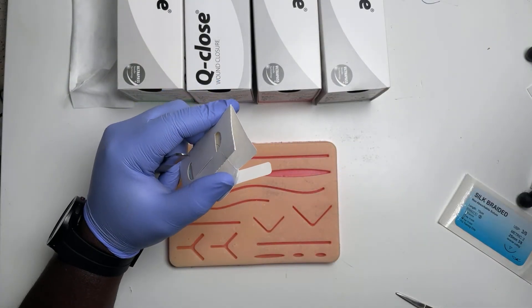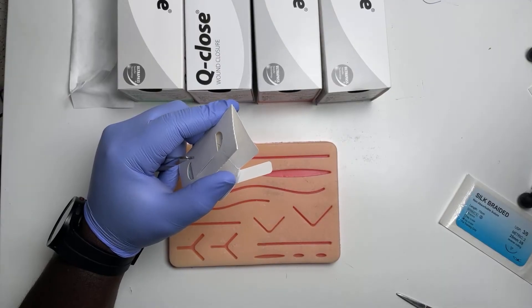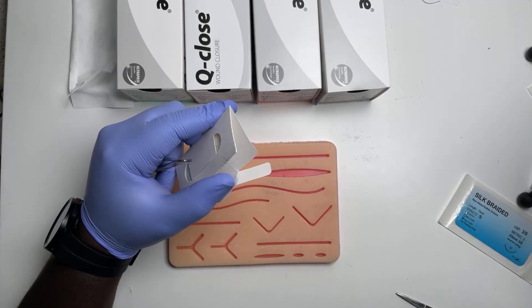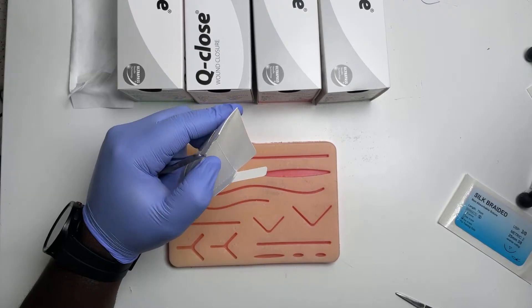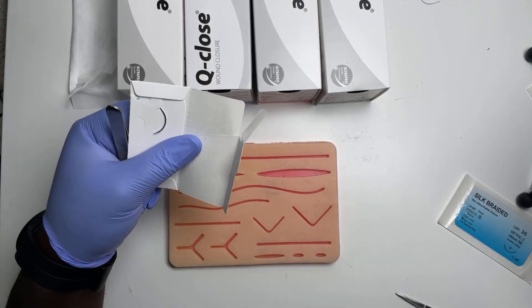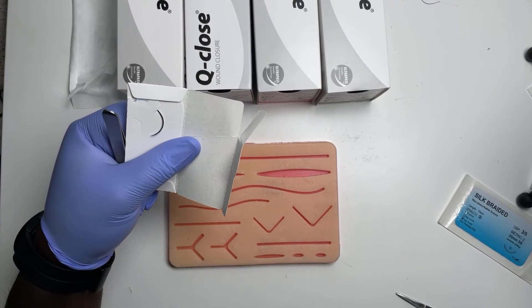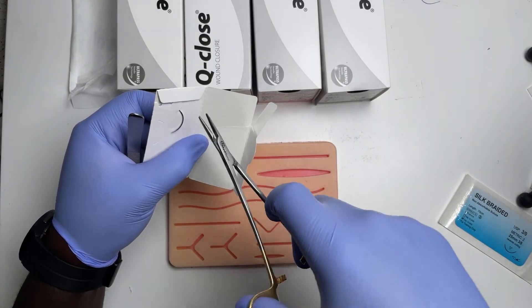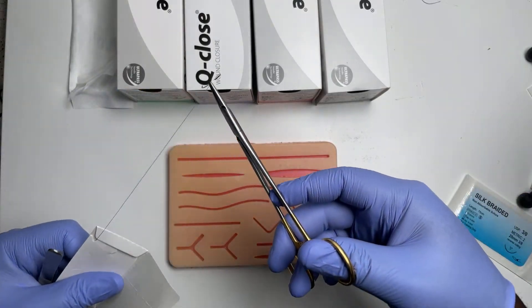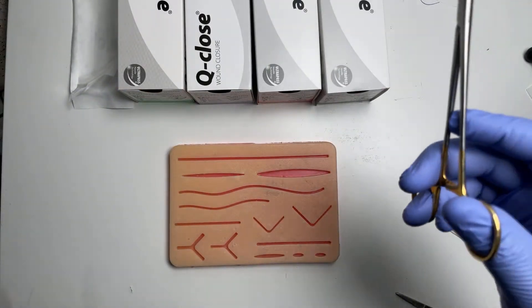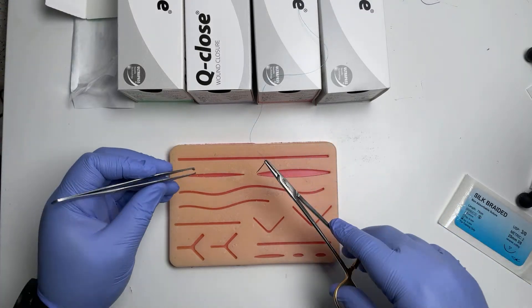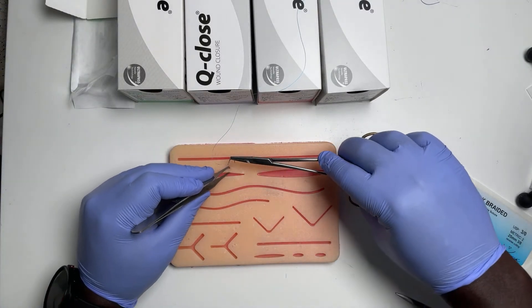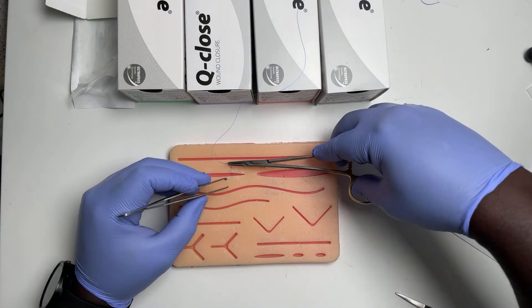So what we want to do is take out our needle holder, take it out like this, and pull the packet away. You're going to go in at 90 degrees and rotate.